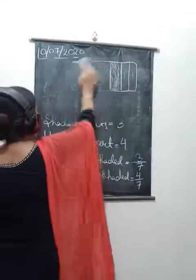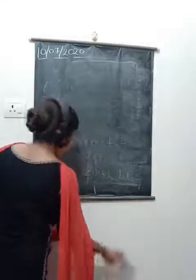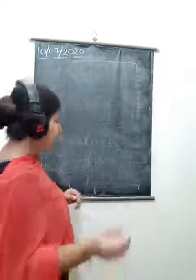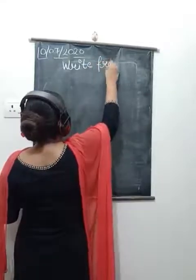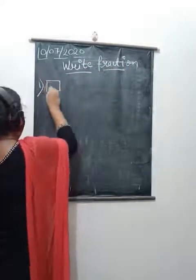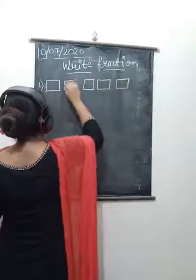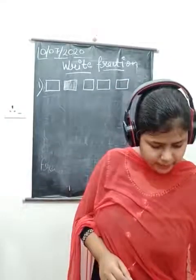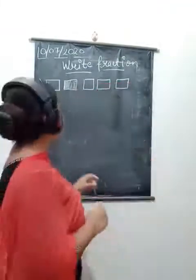Now in the denominator we always write the total equal parts a figure has been divided into. Now let us move to the next topic: writing a fraction for the given figure. You have to write the fraction which represents the shaded part.